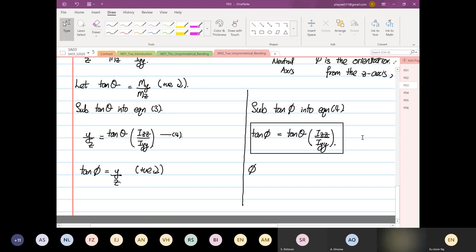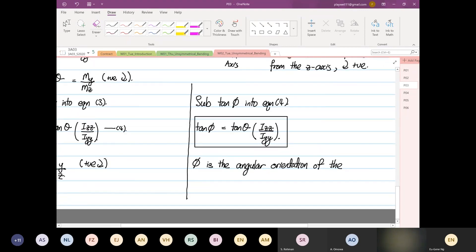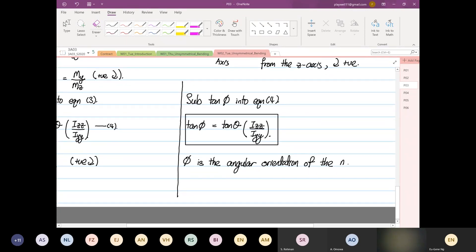What we see over here is that pi is the angular orientation, orientation of the neutral axis.